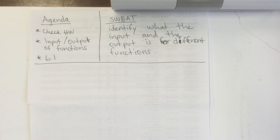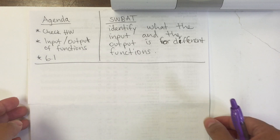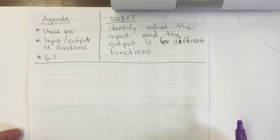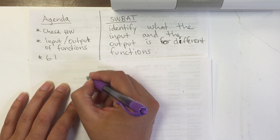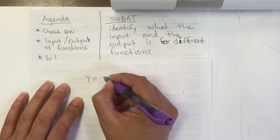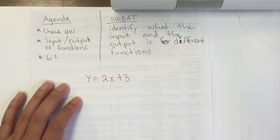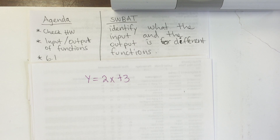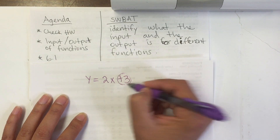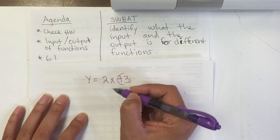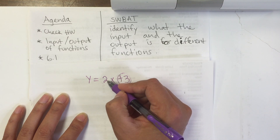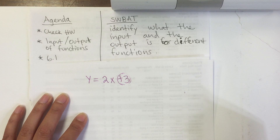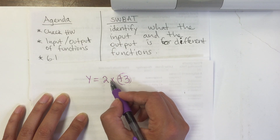Before we even go into functions, I just want you to recall what an equation with two variables looked like. It was y = 2x + 3, where the 3 stands for what you have right now — the initial point — and the 2 will be the slope. An example: I have three dollars and I get two more dollars every day.